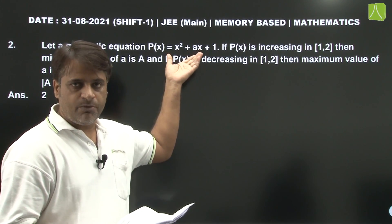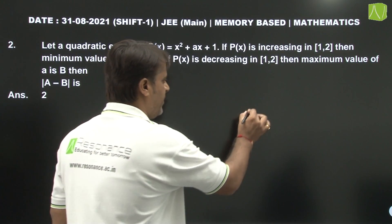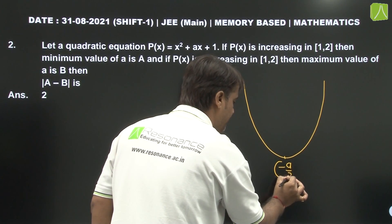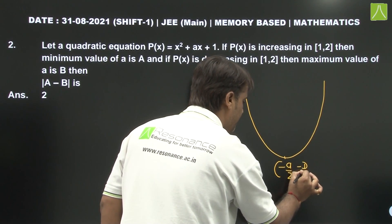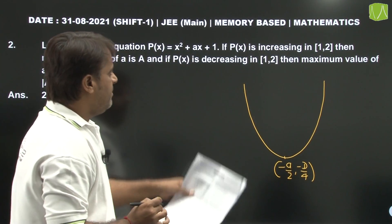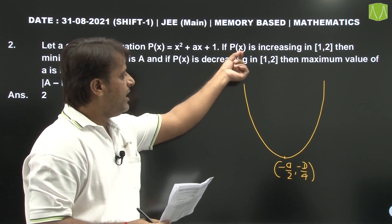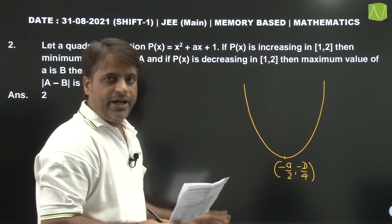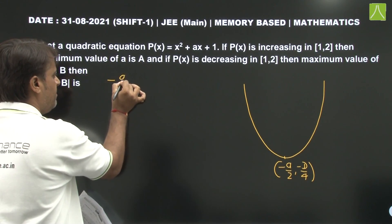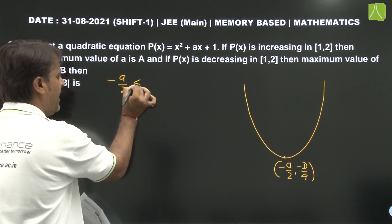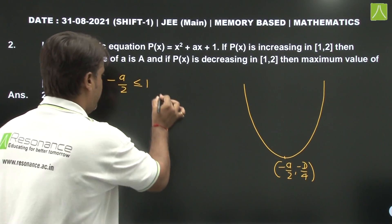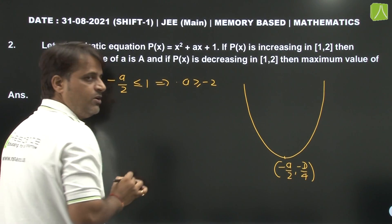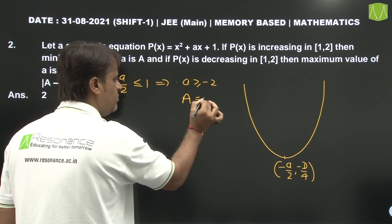The expression given to us is an upward parabola. Draw vertex: x-coordinate of vertex is minus A by 2, y-coordinate is minus D upon 4. For P(x) to be increasing on [1, 2], the vertex must be to the left of x = 1, so minus A by 2 is less than or equal to 1, which means minus A is greater than or equal to minus 2. So minimum value of A, i.e., capital A, equals minus 2.